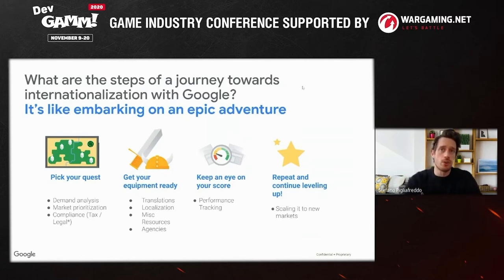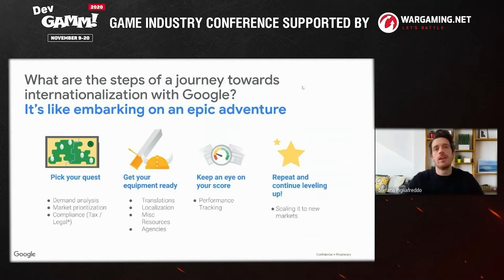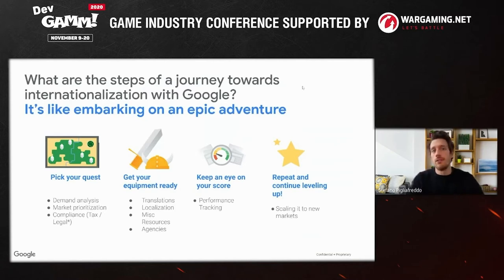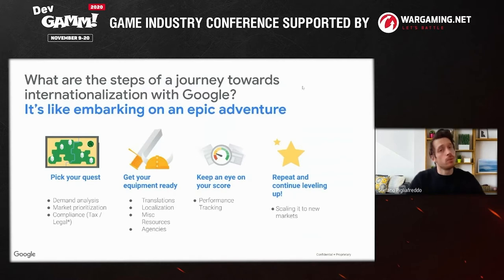How do we understand which geographies are most rewarding? We start with demand analysis, then we do the prioritization exercise itself. There are other elements to take into consideration as well, such as compliance. If we move to the equipment part, that actually means having all your operational levers in place: translations, localization efforts, the various resources you need to pull into the operative part of your plan, and then potentially reaching out to third parties and agencies — that's something we're going to cover as well.